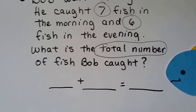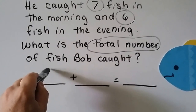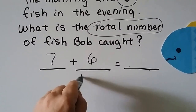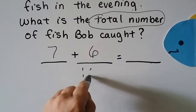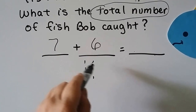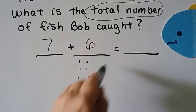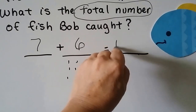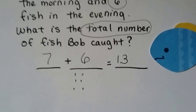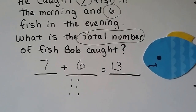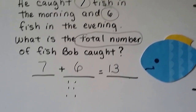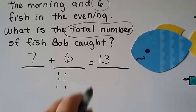That means we're going to add seven plus six. We can use counters if we need them — seven, eight, nine, ten, eleven, twelve, thirteen. And what's our label? Thirteen what? Thirteen fish.